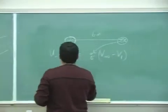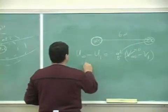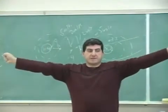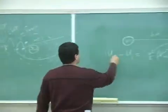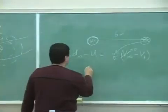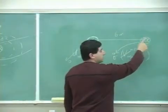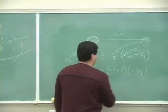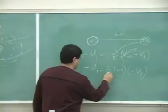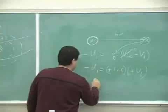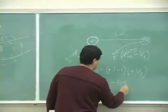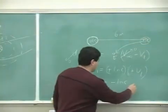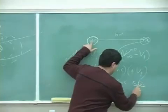U at infinity is zero — just as we define the potential at infinity to be zero, when two charges are infinitely far apart their potential energy is zero. So that term drops out. Q here is negative one nanocoulomb, and V₁ is the potential created by the first charge at that point, which is k times q₁ over r₁.